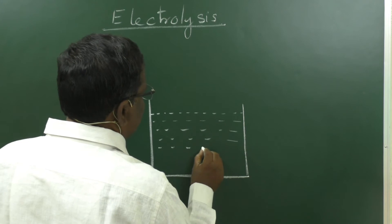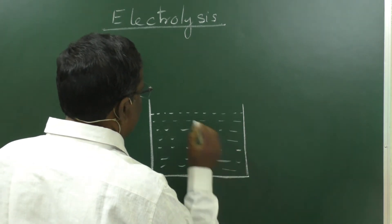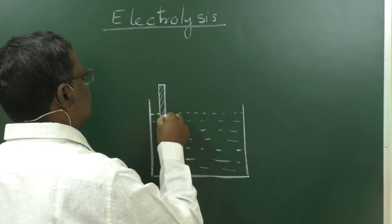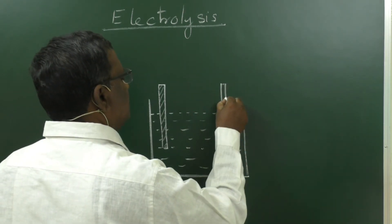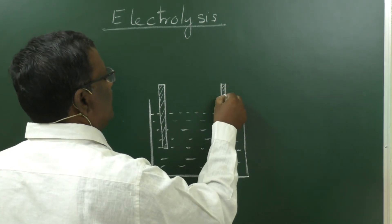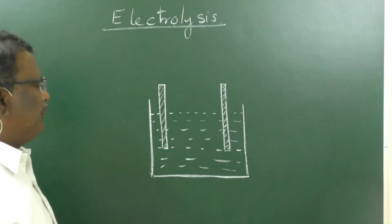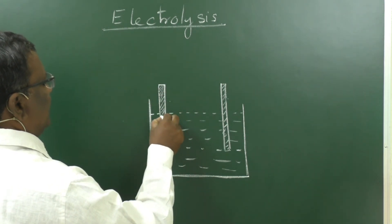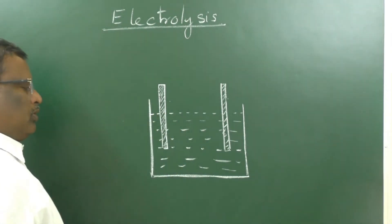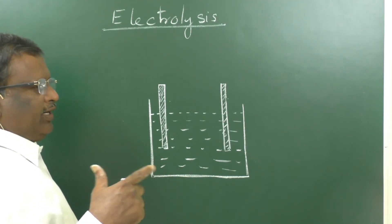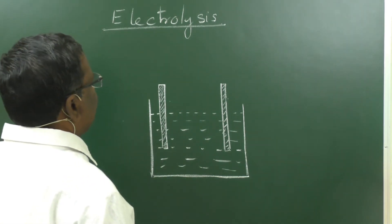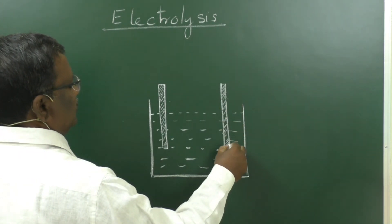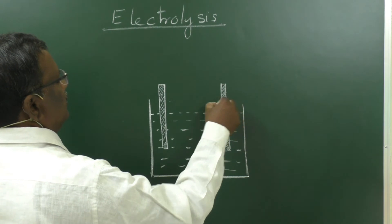Let us take fused NaCl — fused sodium chloride solution. I am immersing two platinum rods. These two rods will supply external EMF, which is received from an external battery. These rods are metal rods — whatever the metal, not only platinum, any conducting metal can be used as an electrode; either graphite can also be taken. Any metal can be used for this present instance. These electrodes are metal rods — one is connected to positive and the other electrode is connected to negative.